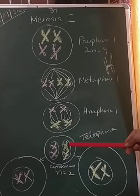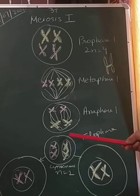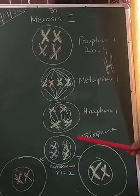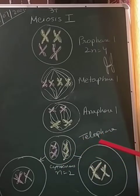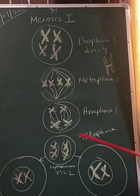Next is telophase one. In telophase one, the nuclear membrane and nucleolus will reappear, as we can see here. Cytokinesis follows after telophase one, and this results in a dyad of cells.